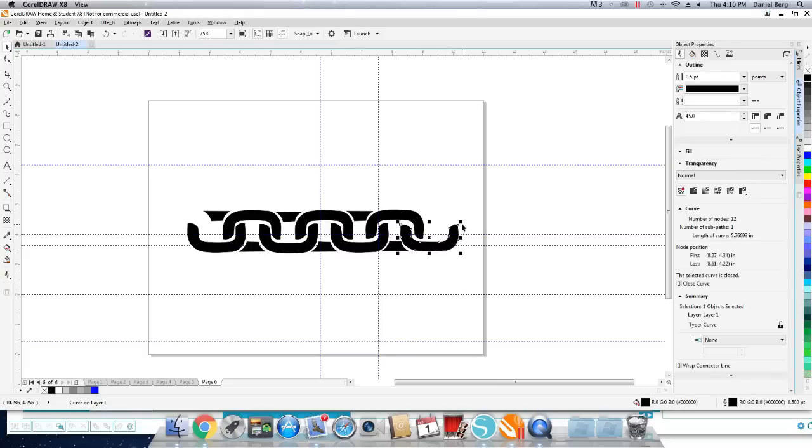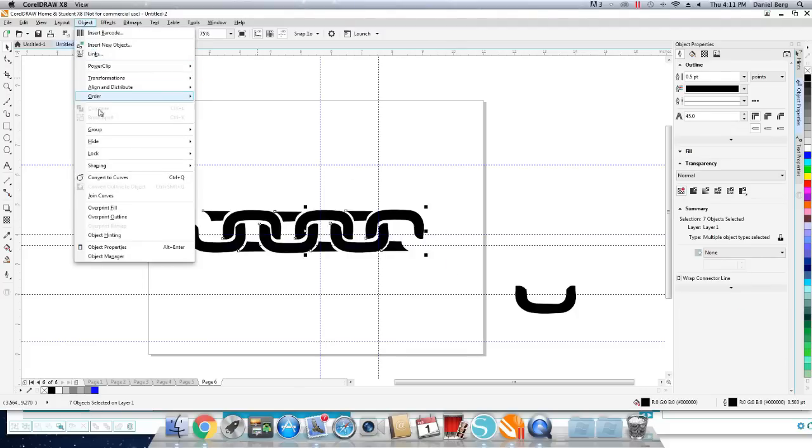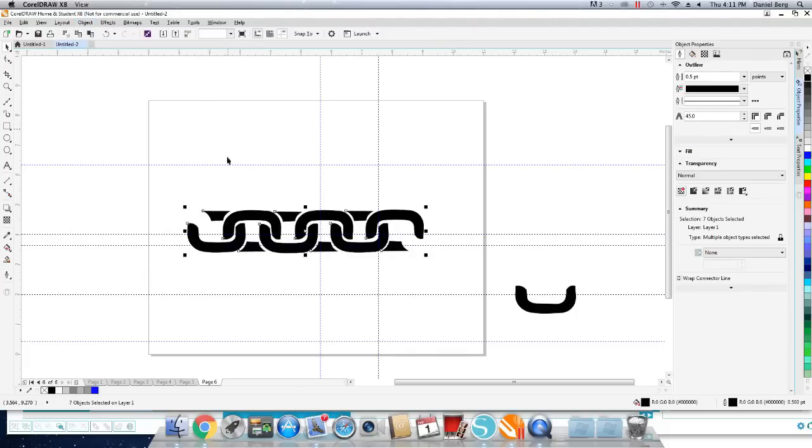You really want to end up with a nice black logo or artwork that you're going to import into the Cameo software. What I'm doing here is I'm creating a series of chain links. These are going to interconnect, so I can copy and paste these and add an additional one onto the end.